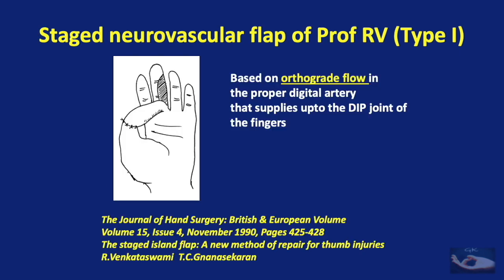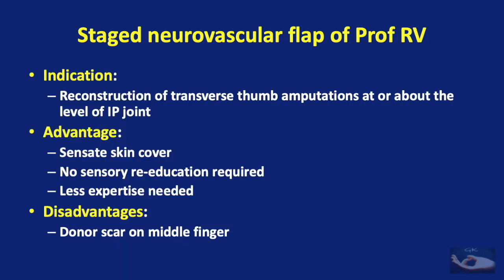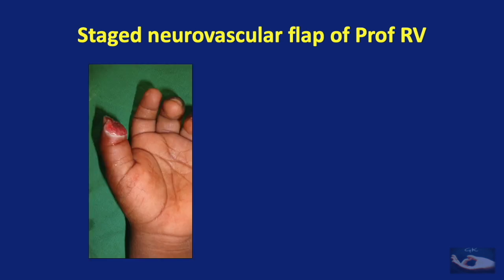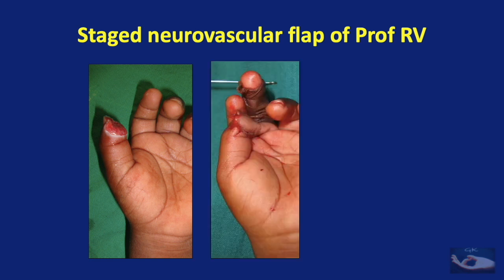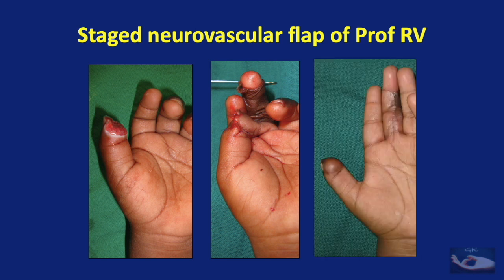The staged neurovascular flap of Professor R. Venkataswamy is another interesting intrinsic flap based on orthograde blood flow in the proper digital artery, supplying up to the distal interphalangeal joint. It is indicated for reconstruction of transverse thumb amputations at or about the level of the interphalangeal joint, providing sensate skin cover with no sensory re-education required and less expertise needed. The ulnar digital nerve of the thumb is tagged, the pedicled flap from the middle finger is inset to the thumb defect, and when divided at two weeks, the digital nerve from the middle finger is co-opted to the ulnar digital nerve of the thumb.